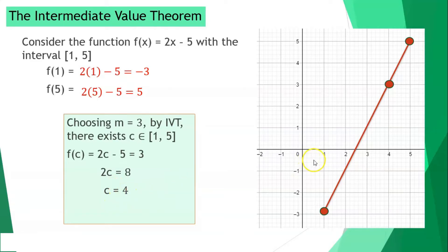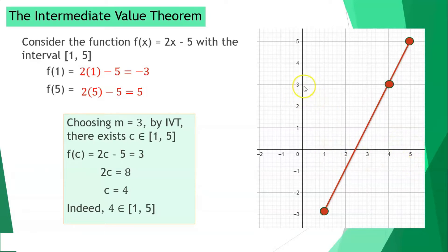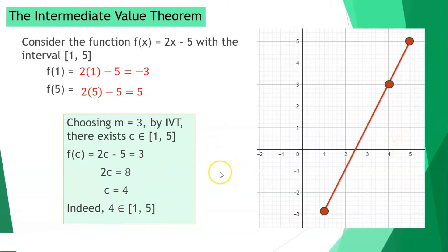Transferring negative 5 to the other side, that would become 8. Dividing both sides by 2, the value for c is 4. Indeed, 4 is within the interval 1 until 5. So if our y is 3, the corresponding x is 4, which is within the given interval.